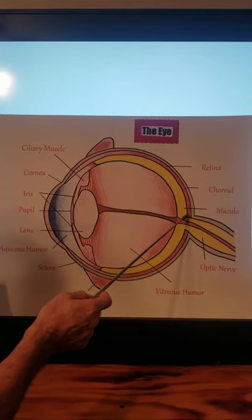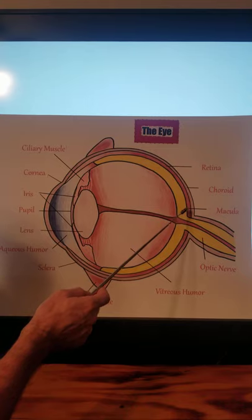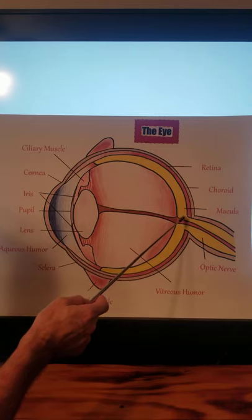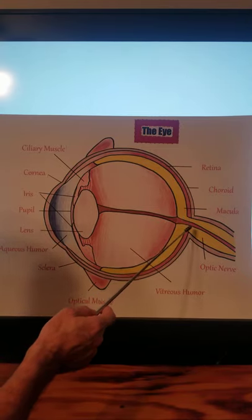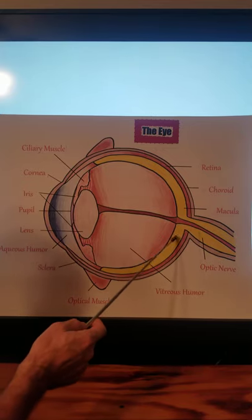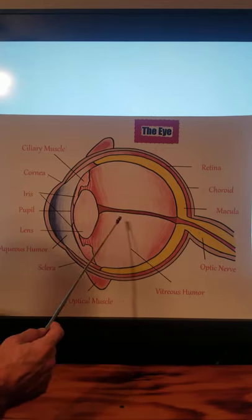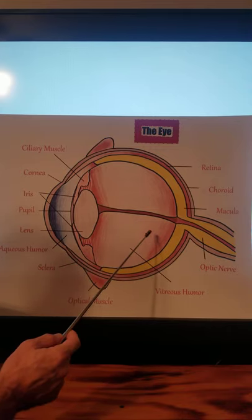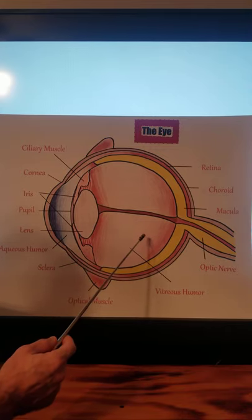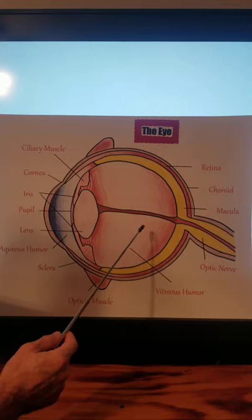Then we have the macula, which is the area of acute central vision responsible for reading, discrimination of fine details, and color. We have the optic nerve, the largest sensory nerve of the eye — it carries impulses for sight from the retina to the brain.